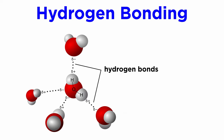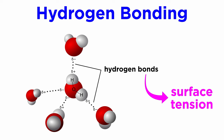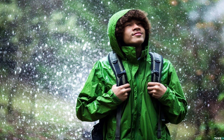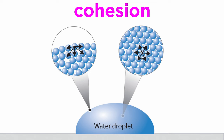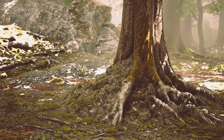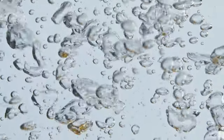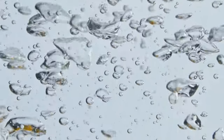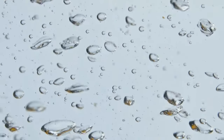One water molecule attracts another via hydrogen bonds, and this is what creates surface tension in a group of water molecules. Next time it rains, check out all the droplets that form when the water comes into contact with a waterproof jacket. The bonding that makes the water molecules stick together is called cohesion. This property helps plants take up water at their roots. Cohesion also contributes to water's high boiling point, which helps animals regulate body temperature.